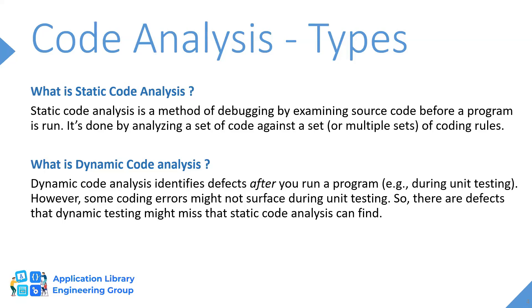Static tools will help us in the analysis of code. There are two types of code analysis: static and dynamic. Static code analysis is a method of analyzing the code before the program is run. This is done by checking the given code against a set of coding rules — such as maximum number of lines within a file or within a method, or number of branchings within a method, to maintain readability.